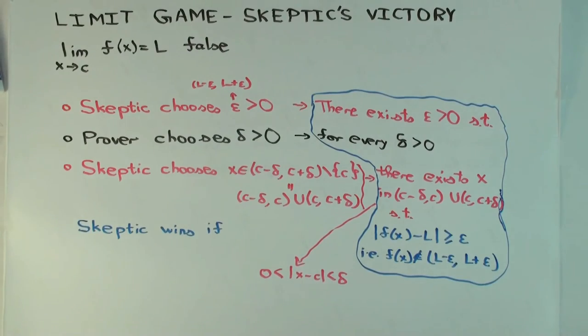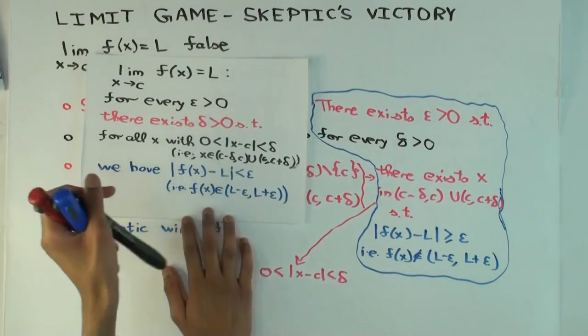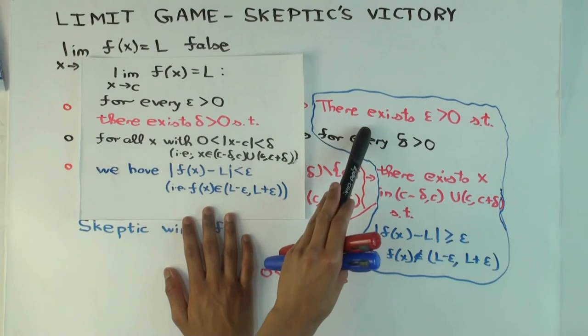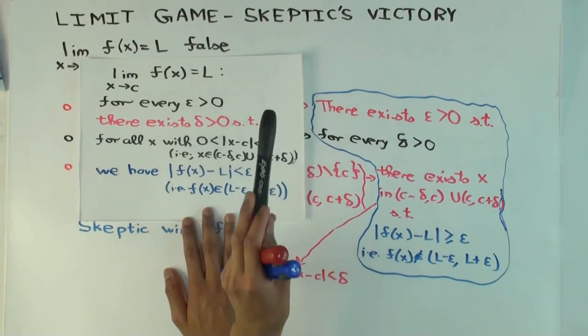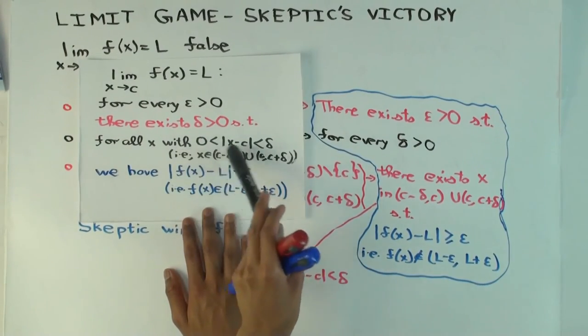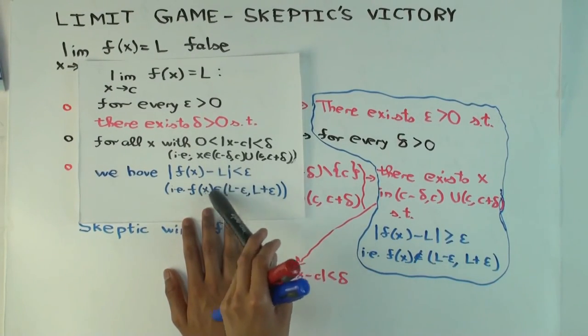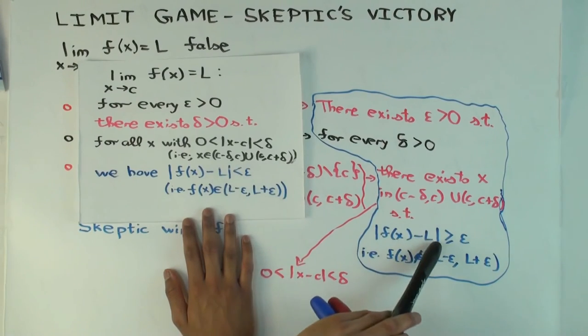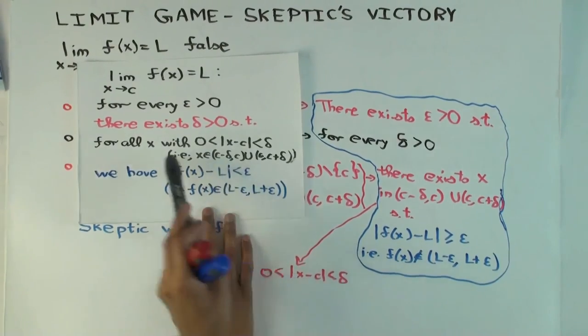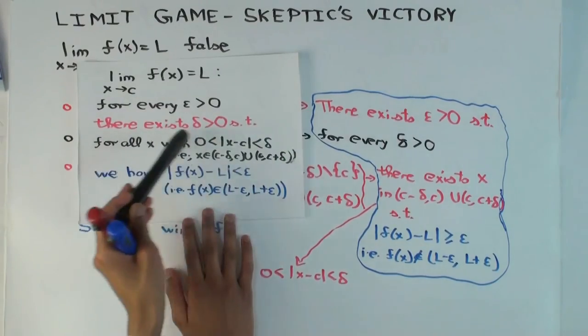Now let me just compare it with the usual definition for the limit to exist. Okay. The colors are in reverse chrome. That's fine. So for every epsilon greater than zero became, there exists epsilon greater than zero, because the player who's in control has changed. There exists delta greater than zero became, for every delta greater than zero. For all x with this became, there exists x satisfying this condition. And what happened to the last clause? The less than epsilon became greater than or equal to, right? So the last clause just got reversed in meaning, all the others we just changed the quantifier from for all to there exists and from there exists to for all. And that just is because we've changed who's winning.